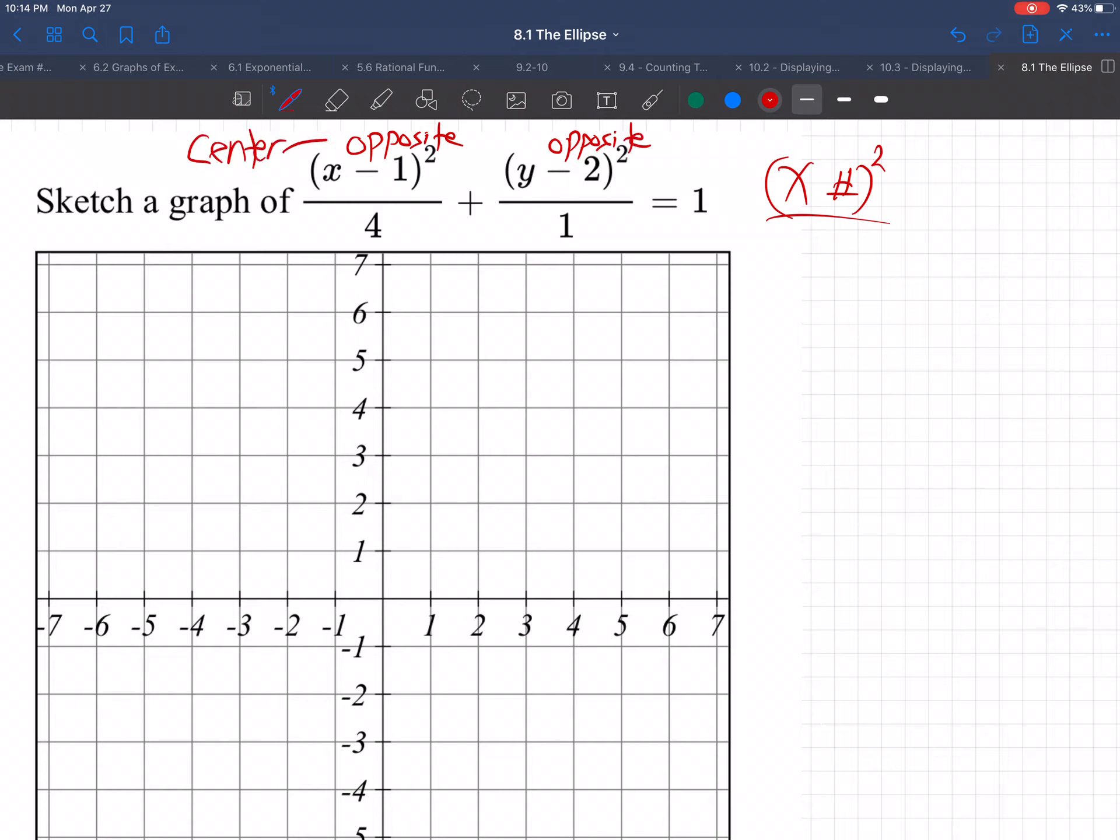I'm just going to say the opposite of this number and the opposite of this number is the center. The center of the graph is this number, comma, that number opposite. So the center is going to be positive 1, comma, positive 2.